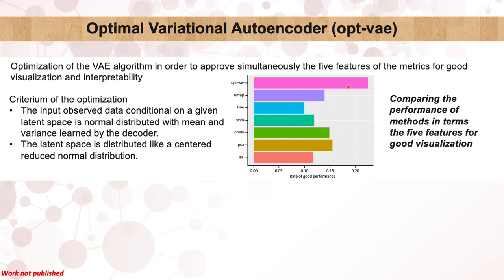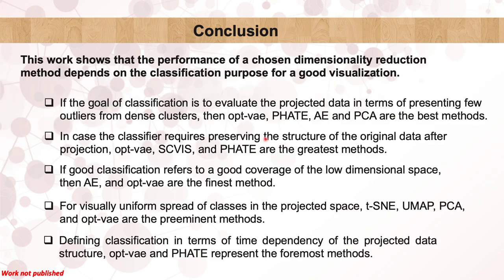None of the methods highlighted above was optimal simultaneously for all five objectives. We then introduced a neural network approach called the variational autoencoder, which provided a probabilistic manner for describing an observation in latent space. In conclusion, we propose an optimal variational autoencoder as a method that preserves meaningful properties of the original biological process after reduction, as well as providing better visualizations and interpretability. We conclude that this work investigated the performance of dimensionality reduction methods as a function of good classification, visualizations, and interpretability.